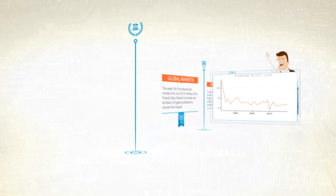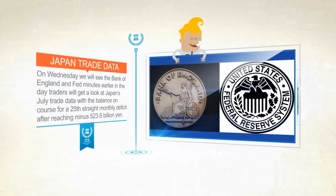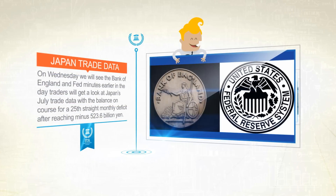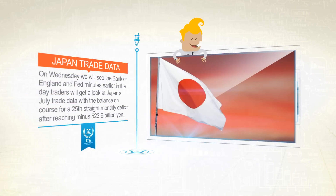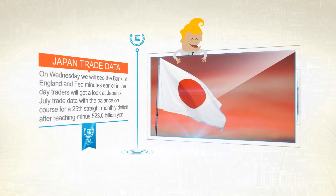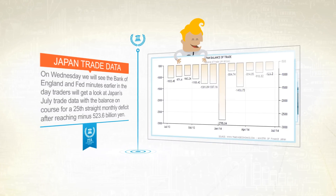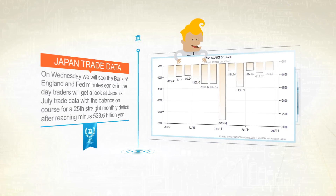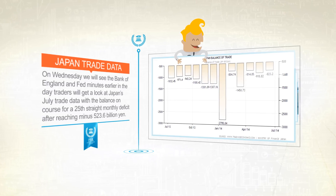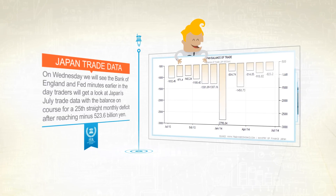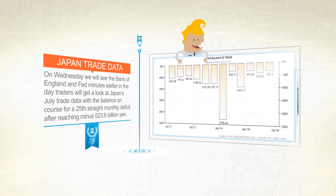On Wednesday we will see the Bank of England and the US Federal Reserve minutes. Earlier in the day, traders will take a look at Japan's July trade balance, with the balance on course for the 25th straight monthly deficit after reaching minus 523 billion yen.